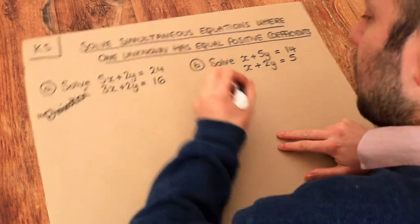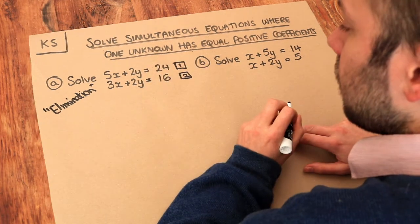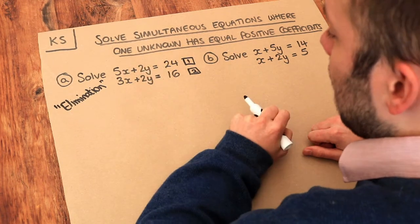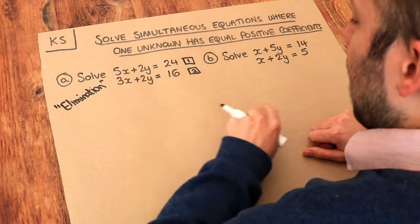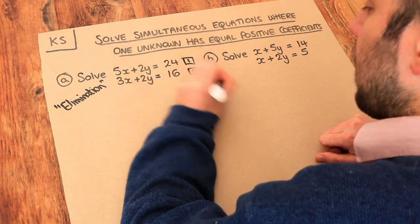Now if we just number these equations, let's call this equation 1 and this equation 2. Can you see that the number in front of these y's here are the same? If they are the same, let's find out what happens when we subtract the two equations.